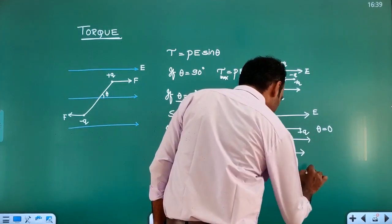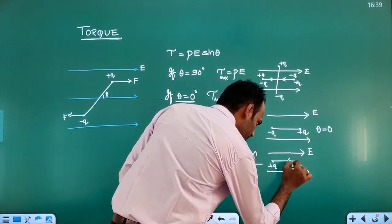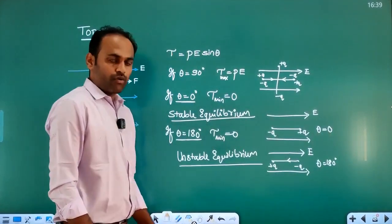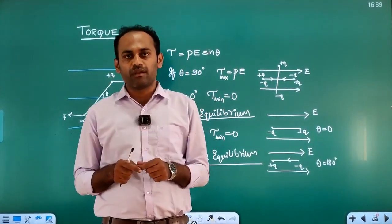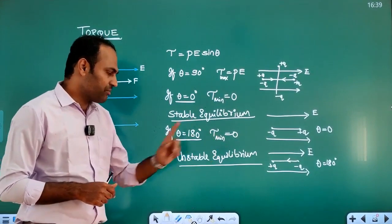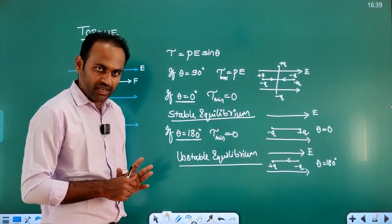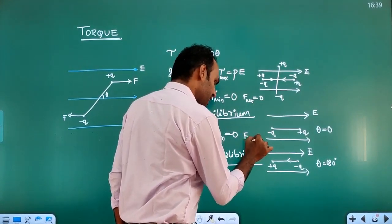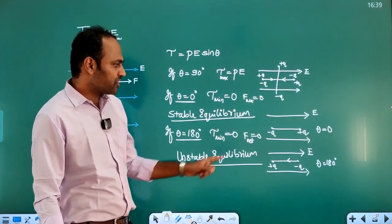So, if the dipole is anti-parallel to the electric field, it is in unstable equilibrium. In both stable and unstable equilibrium, torque is 0 and net force is 0. But the type of equilibrium changes — that is the key difference between the two cases.